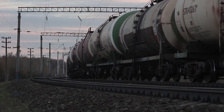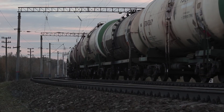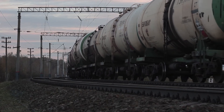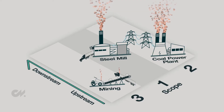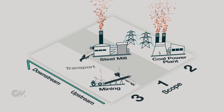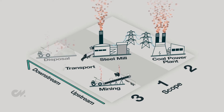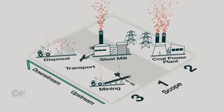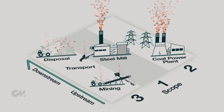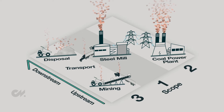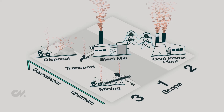Downstream scope 3 emissions include things like the emissions from the transportation of your product or emissions produced during end-of-life recycling or disposal of your product. And that's scope 1, 2, and 3 emissions.